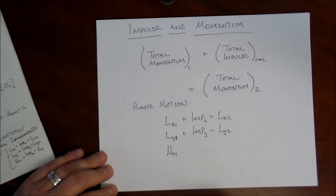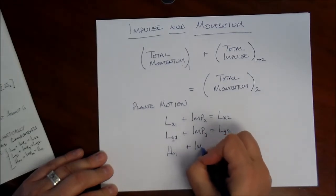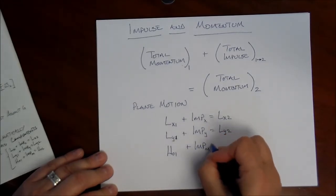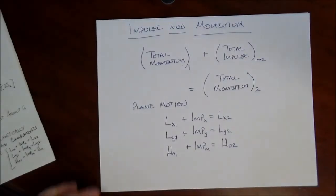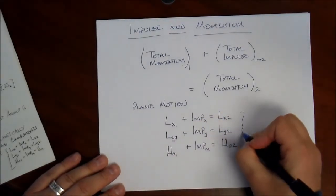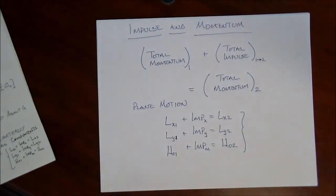and the third one is the moment. Angular momentum plus the impulse due to moments equals the final angular momentum. So those are the three equations of motion that we will use for plane motion of rigid bodies and impulse and momentum type problems.